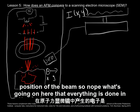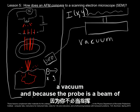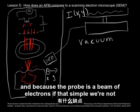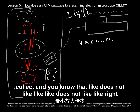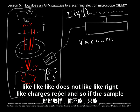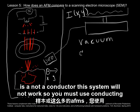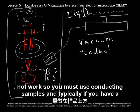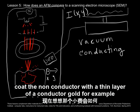Note that everything is done in a vacuum, and because the probe is a beam of electrons, if the sample were not conducting, all the electrons would collect. Like charges repel, so if the sample is not a conductor, this system will not work — you must use conducting samples. Typically, if you have a non-conductor, you coat it with a thin layer of a conductor such as gold.